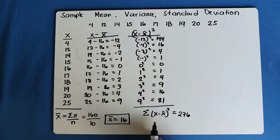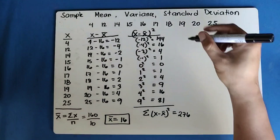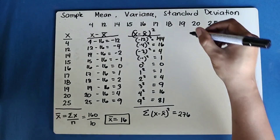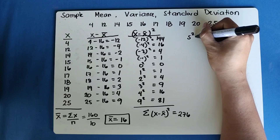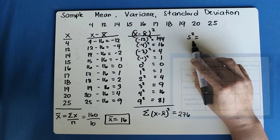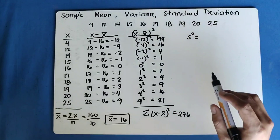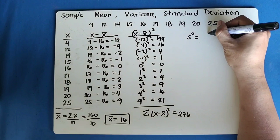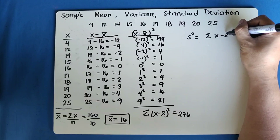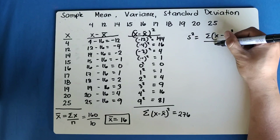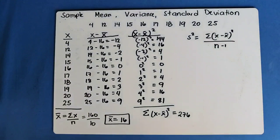We computed that summation so we can use it to find the sample variance. The symbol for sample variance is S-squared — when you see S-squared, it signifies sample variance. The formula in getting the sample variance is: summation of (x minus mean) squared, divided by n minus 1.